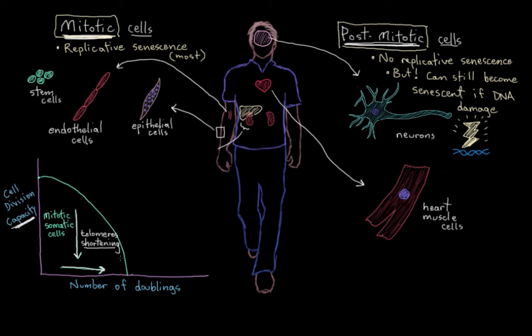But we have another type of cell, some of our stem cells. They start off up here. Let's say they start off at the same place. They have a really high cell division capacity. But as they divide, their line, their curve, just stays really high. Their cell division capacity, regardless of the number of doublings, regardless of the number of times they've divided, their cell division capacity stays really high.